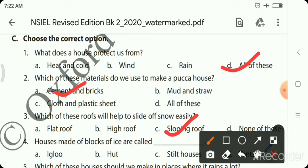Which of these houses should we make in places where it rains a lot? If it rains a lot, then igloos, stilt houses, or tent? So stilt houses.